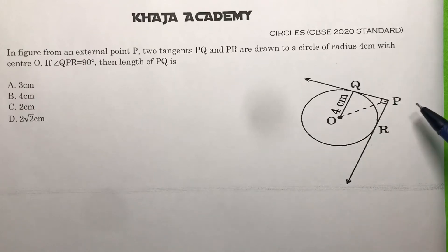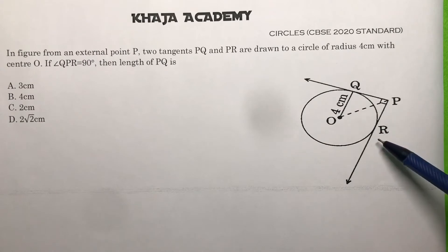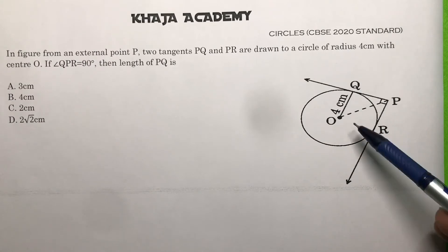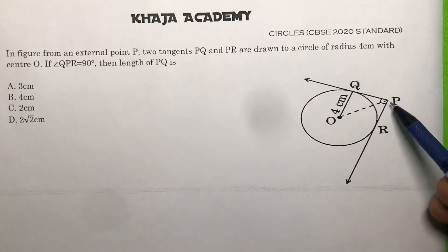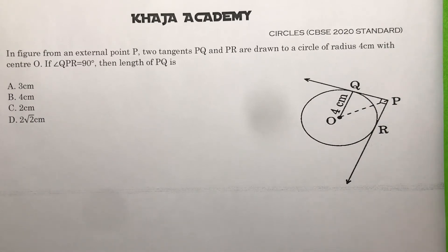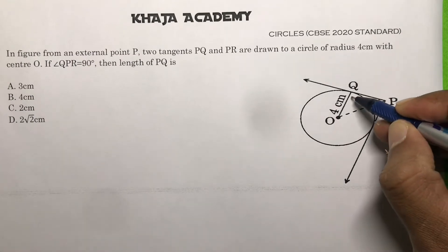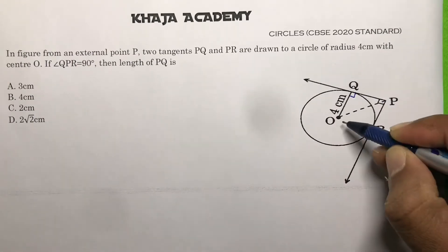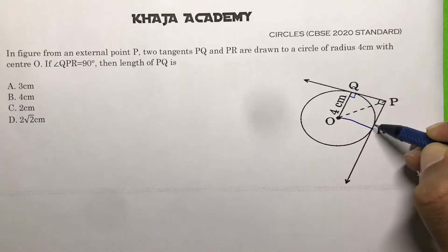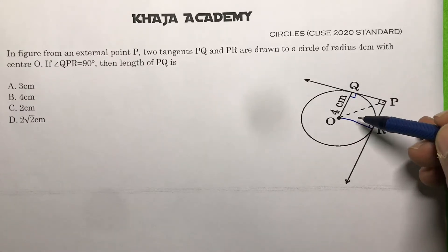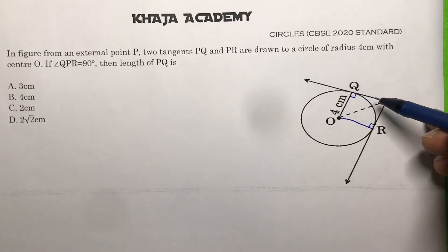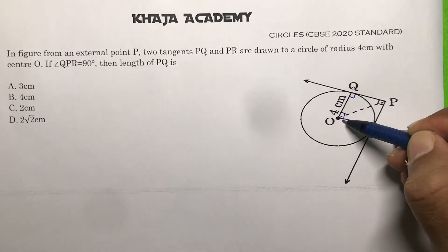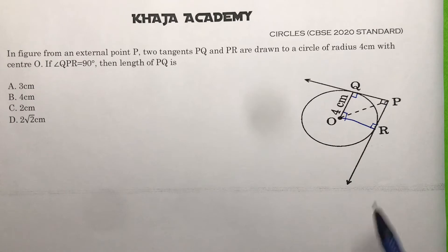In the figure, from an external point P, two tangents PQ and PR are drawn to a circle with center O and radius 4 centimeters. The angle QPR is 90°. Since the angle between a radius and a tangent is 90°, if we join OR, that angle is also 90°. So in quadrilateral OQPR, three angles are 90°, meaning the fourth angle is also 90°.